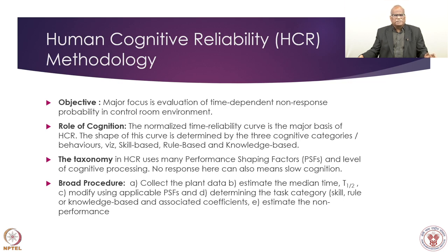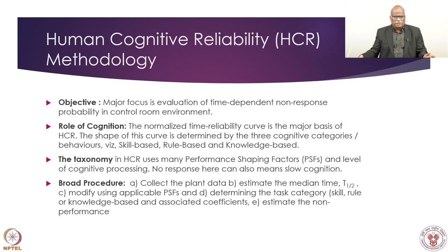Instead of error, in cognitive HCR it is called probability of non-performance — meaning a task had some objective and it was not performed in the available time. So probability of non-performance is the key parameter generated in cognitive reliability. The broad procedure is: collect the plant data, understand the problem, estimate the median time, modify using applicable performance shaping factors, determine the task category — whether rule-based, skill-based, or knowledge-based — and then estimate the non-performance probability.